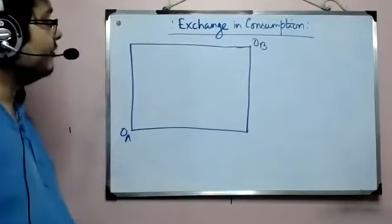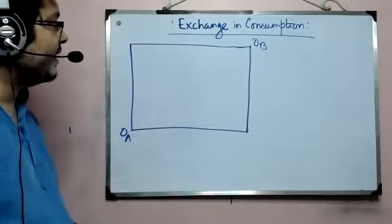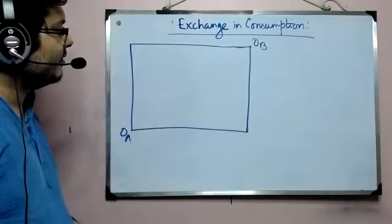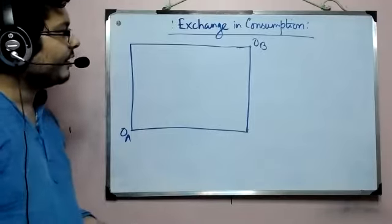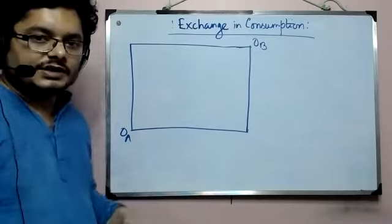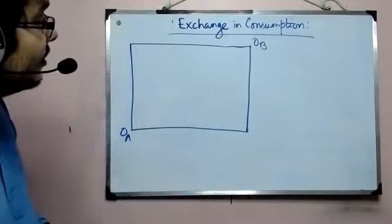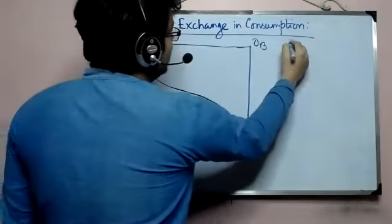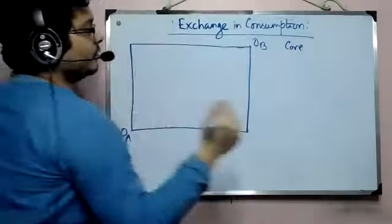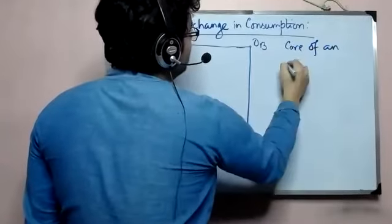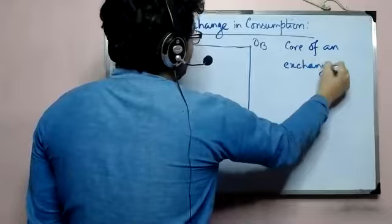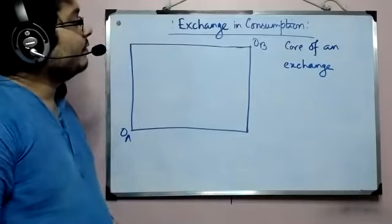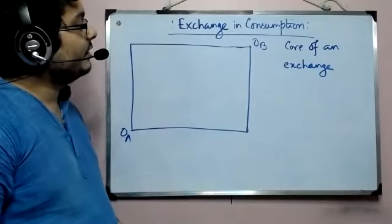Now we are going to find the Pareto efficient allocation in a consumption exchange problem of two consumers. To proceed step by step, we will start from a concept called core. First we will try to find what is called the core of an exchange. The reason is that within that core, we will go for the Pareto efficient points.